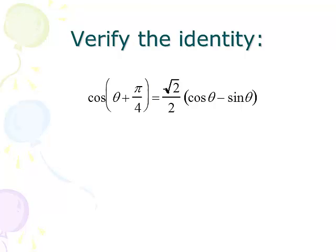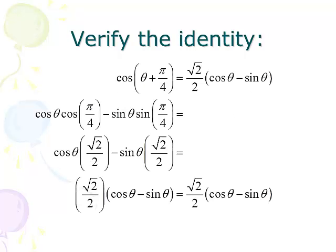Now let's verify some identities. We want to show cosine of theta plus pi over 4 equals square root of 2 over 2 times the quantity cosine theta minus sine theta. Using the cosine of u plus v formula — cosine alpha cosine beta minus sine alpha sine beta — with theta as u and pi over 4 as v, we get cosine theta times cosine of pi over 4 minus sine theta times sine of pi over 4. Since cosine and sine of pi over 4 both equal square root of 2 over 2, we factor that out and get exactly square root of 2 over 2 times the quantity cosine theta minus sine theta.